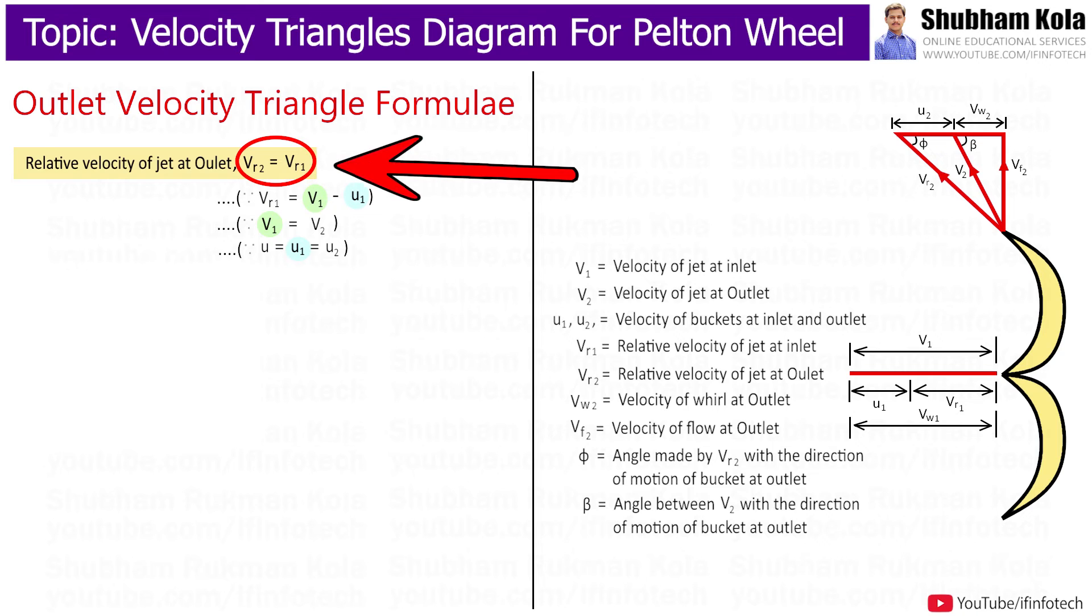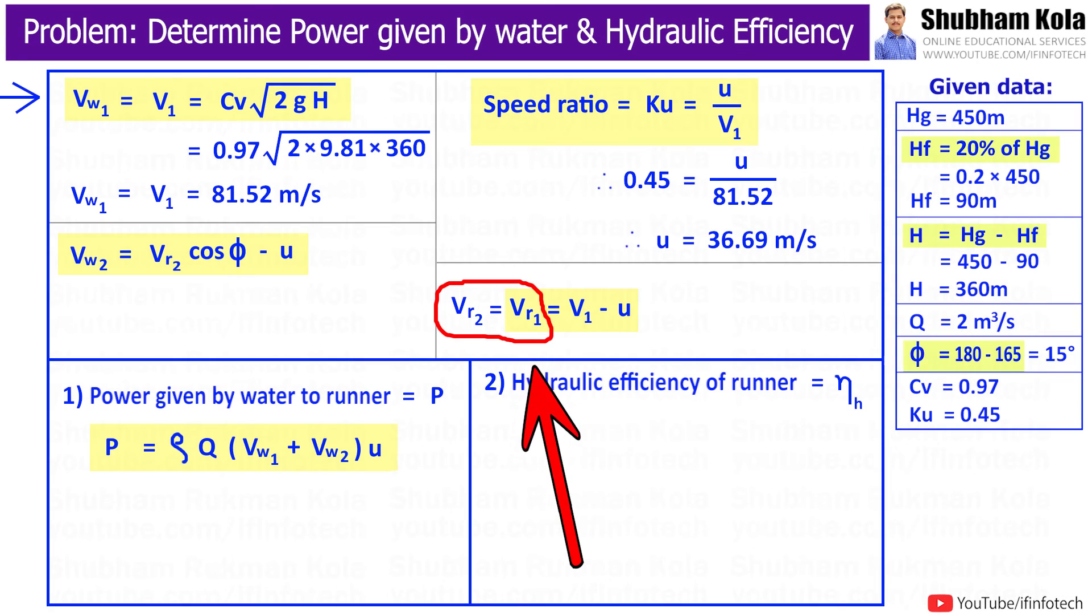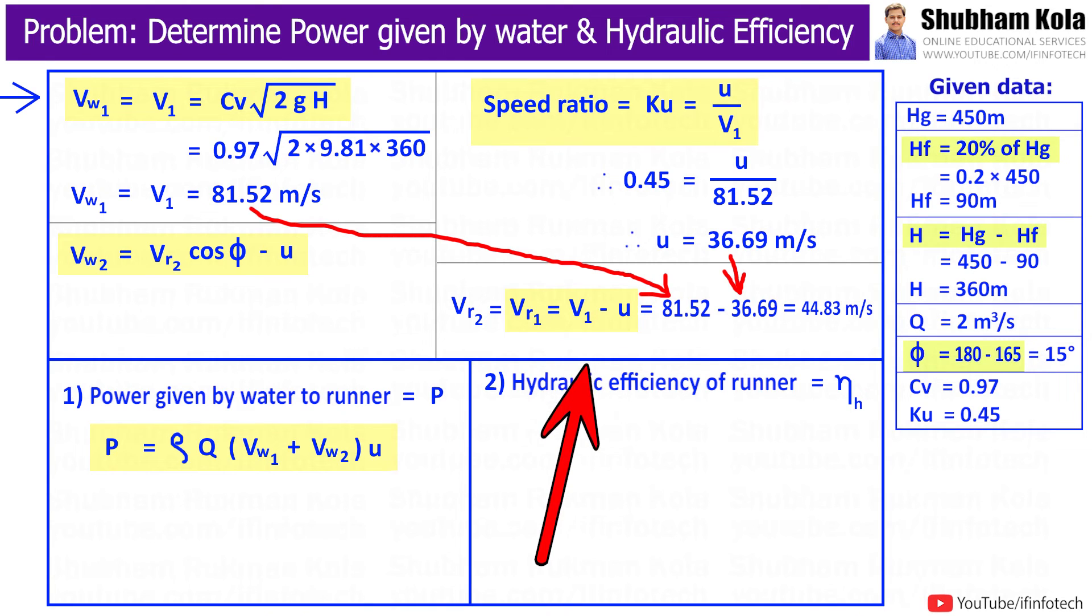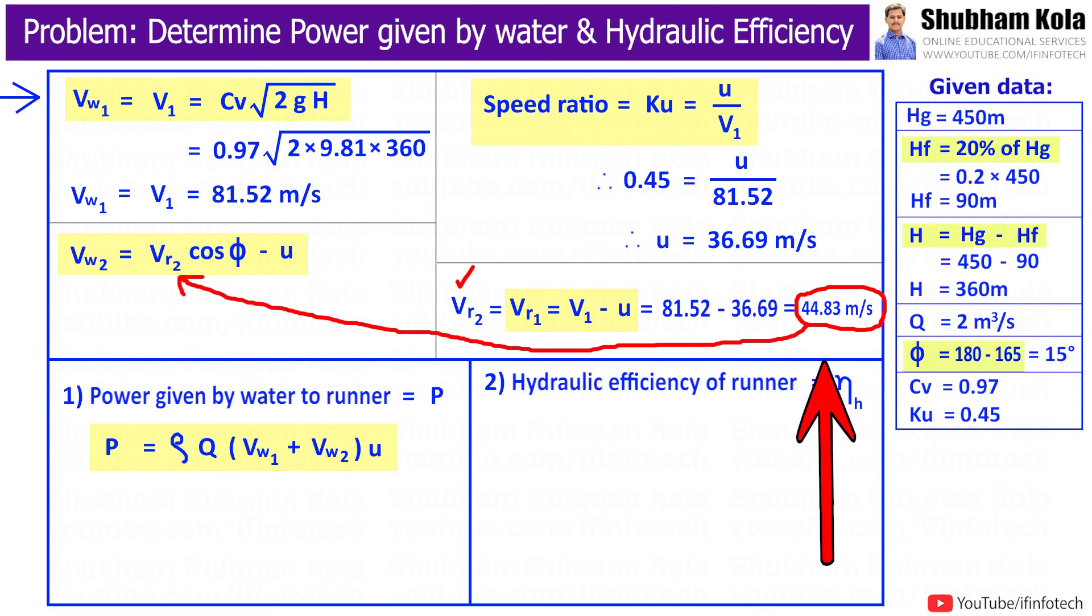Also in the previous video, we had discussed that relative velocities at inlet and outlet are equal, i.e., Vr2 equal to Vr1, and Vr1 is given by formula V1 minus u. Here we have already calculated values of velocity of jet V1 as 81.52 and bucket speed u at 36.69. So this will give me the value of Vr2.